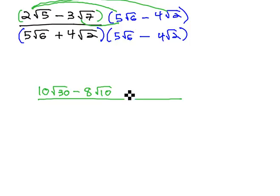Negative 3 root 7 times 5 root 6 is negative 15, square root of 42. And then negative 3 root 7 times negative 4 root 2 is positive 12, square root of 14.